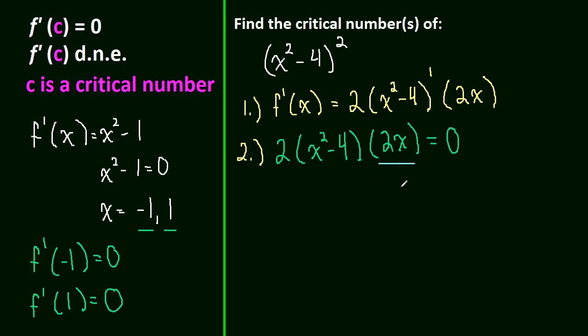Well, 2x equals 0, that means x is going to be equal to 0. So, our answers, we got one of them, so x equals 0 is one answer. And then, when x squared minus 4 equals 0, well, this is when x is equal to negative 2 or 2.